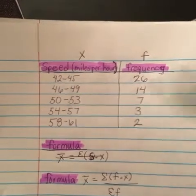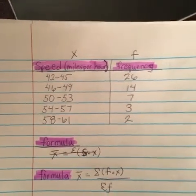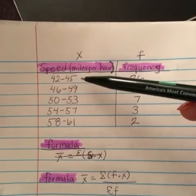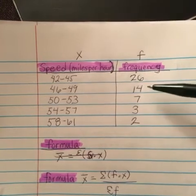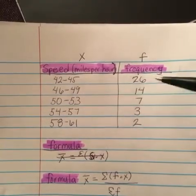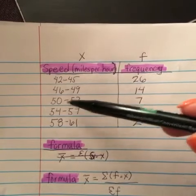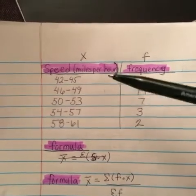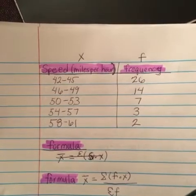We have 26 people who go between 42 and 45 miles per hour, we have 14 people who drive between 46 and 49 miles per hour, 7 people who drive between 50 and 53 miles per hour, and so forth.